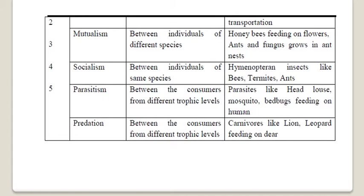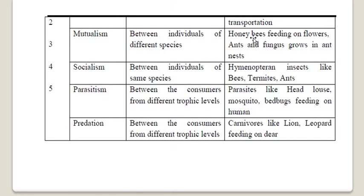An example of mutualism: honeybees feeding on flowers. Honeybees get nectar and pollen grains from the flowers — so honeybees are benefited. The flowers also benefit because pollen grains are transmitted from one flower to another by honeybees, facilitating cross-pollination. The association in which both members are benefited is called mutualism.